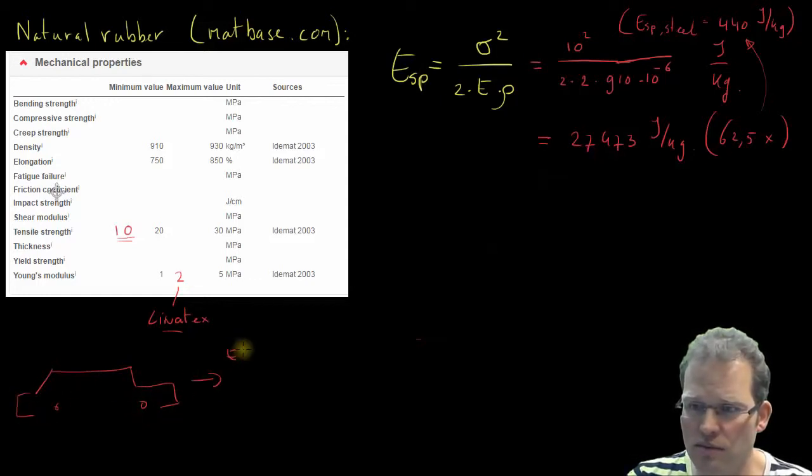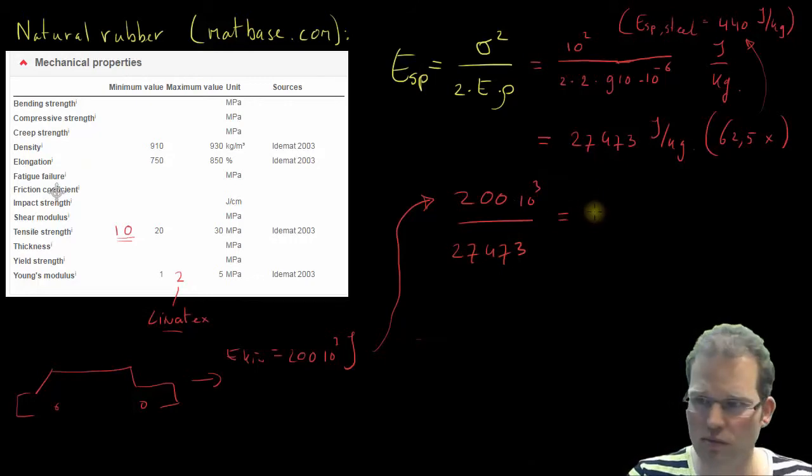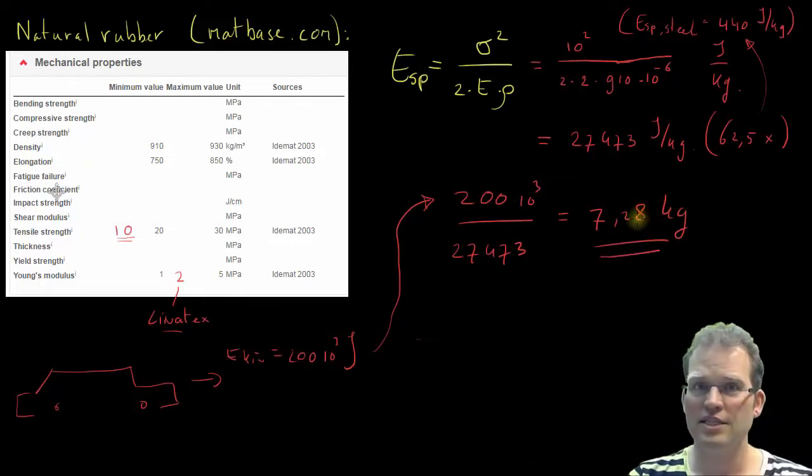If we have this car problem, the car which had a kinetic energy of 200,000 joules, now we get not a spring mass of 455 kilograms but only, we can divide it by 62 and a half. We can also calculate it all over again, let's do that. So we divide the kinetic energy by the specific energy of this natural rubber and we come up with only a spring mass of 7.28 kilograms.